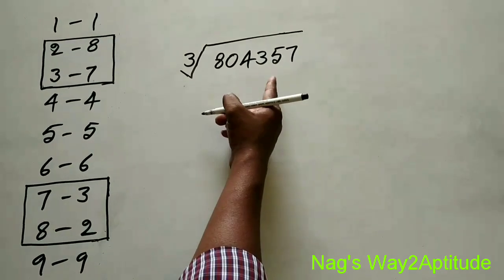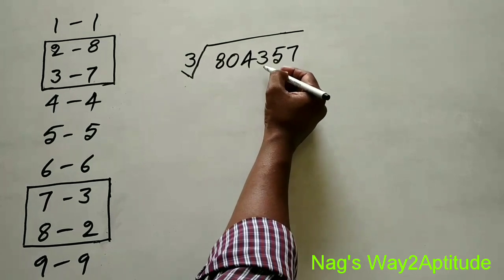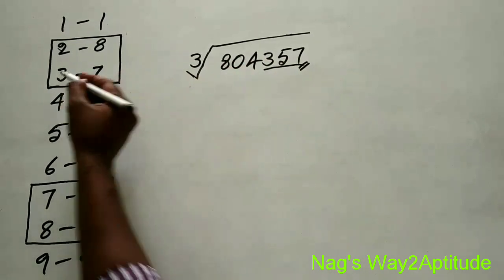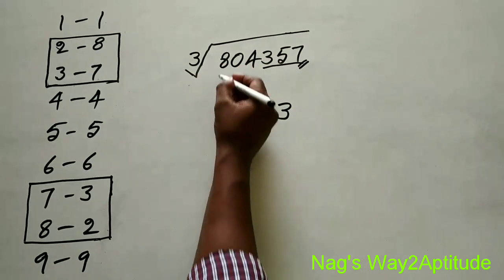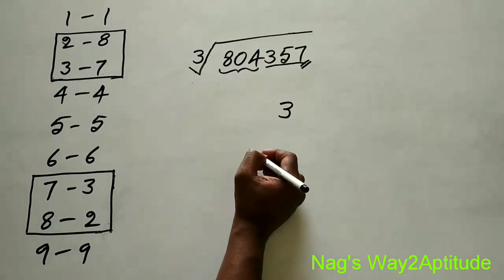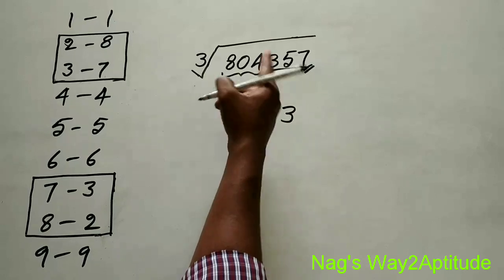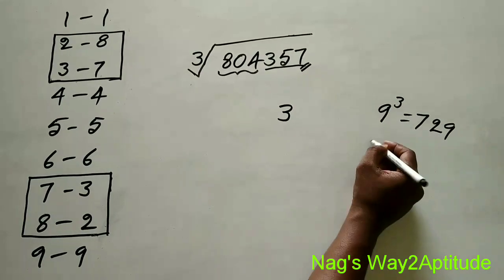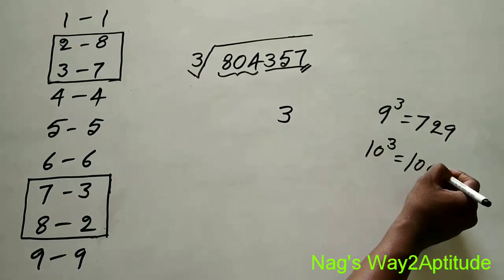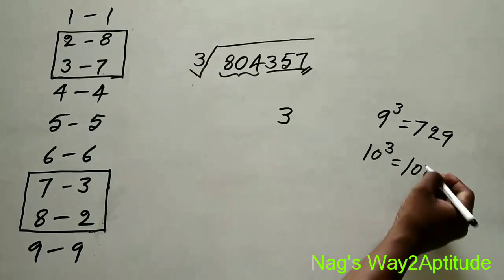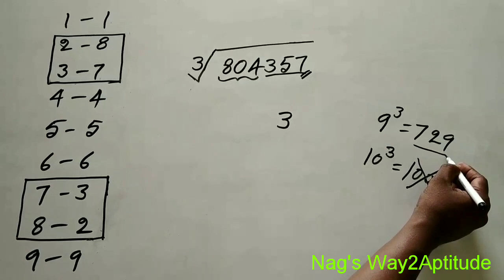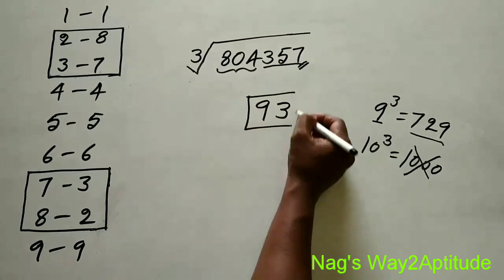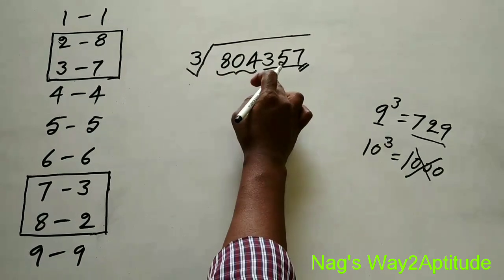Let's find the cube root of 804,357. Take the last 3 digits: 357. The last digit is 7 — since cube of 3 ends in 7, the units digit is 3. Now take the remaining digits: 804. The nearest cube not over 804 — 9 cubed is 729, and 10 cubed is 1000 which is over 804. So we take 9. Therefore the cube root of 804,357 is 93.